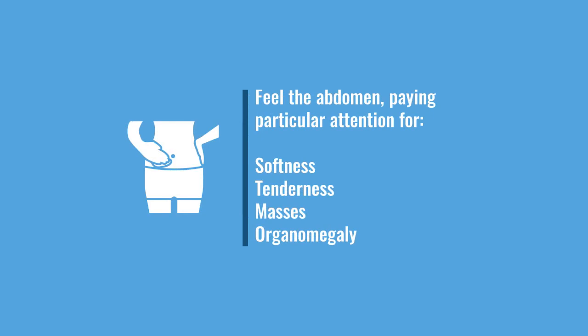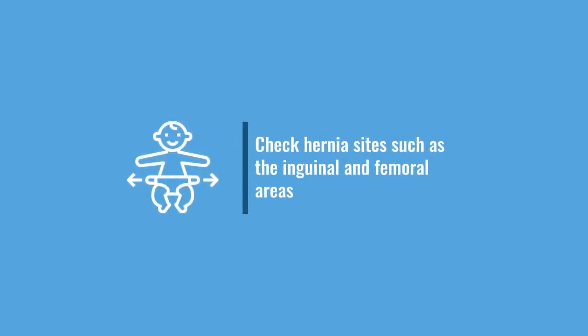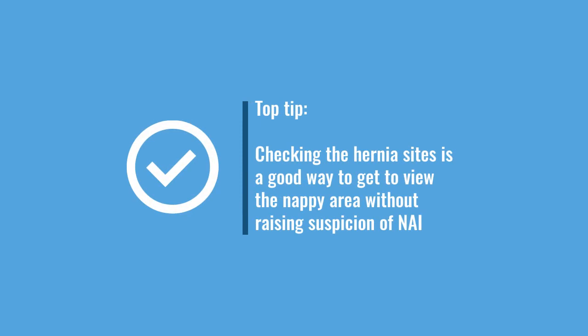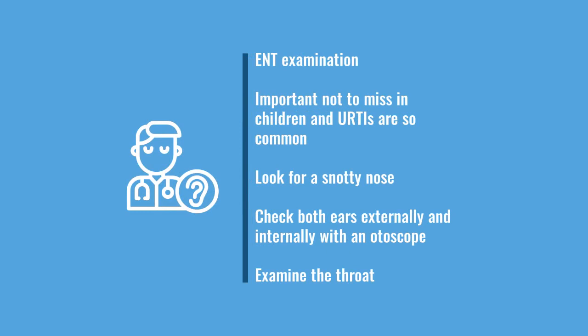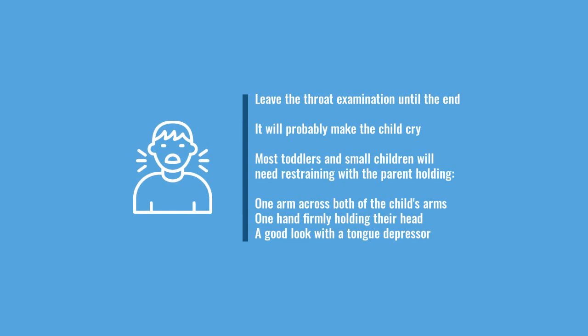Have a quick feel of the tummy — is it soft? Is there any obvious tenderness, masses, or organomegaly, such as a large liver or spleen? Check hernia sites, including femoral and inguinal hernias in the nappy area — this is also a good legitimate reason to examine that area without raising alarm bells for parents, which is particularly useful if there's concern about non-accidental injury and one parent may be more dominant. The ENT examination is also important — lots of viral infections originate from the ears, nose, or throat, so use the otoscope in both ears and examine the throat.